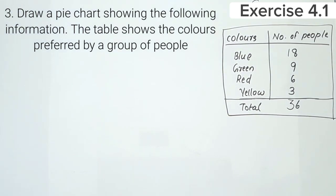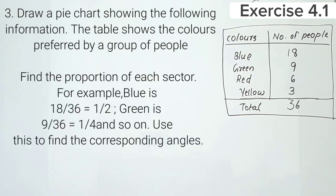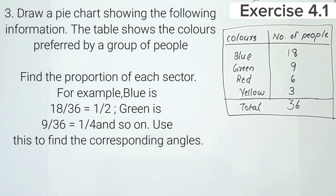This is a pie chart problem. First, find the proportion of each sector. For example, blue is 18 by 36, which equals 1 by 2. Green is 9 by 36, which equals 1 by 4, and so on. Use this to find the corresponding central angles.